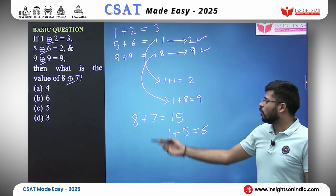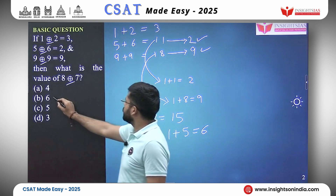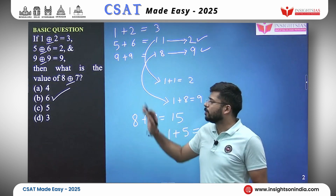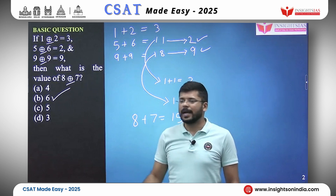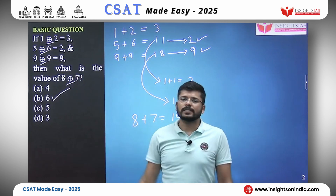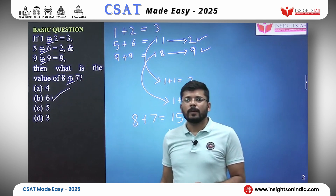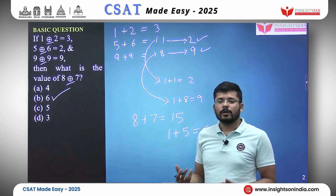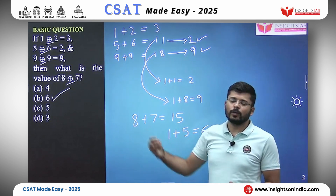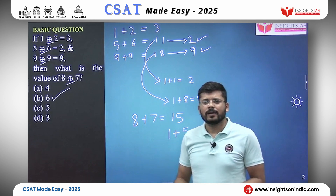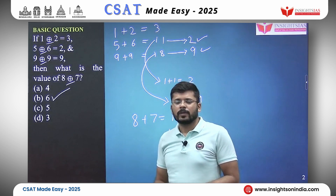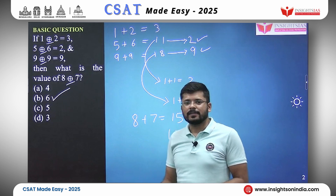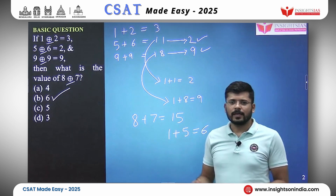So the answer is option B, 6. This was a basic question and we now understand how this notation works. But this is not the only operation it can do — it can take any other kind of operation, which we will see in the next question.